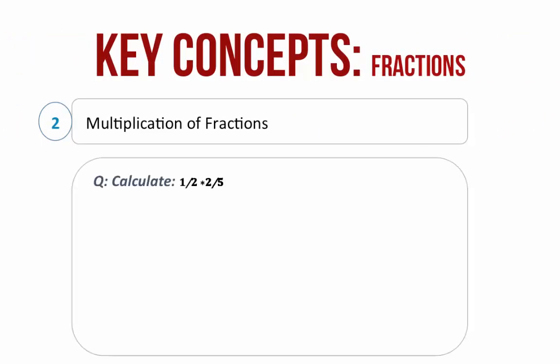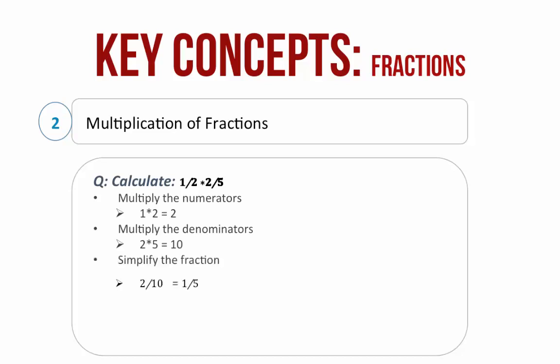Multiplication of fractions. Let us take an example: 1 by 2 into 2 by 5. Multiply the numerators, that is 1 and 2, which equals 2, and multiply the denominators, 2 and 5, which equals 10. The new fraction is therefore 2 by 10. We now simplify the fraction by removing the common factors. 2 by 10 simplifies to 1 by 5. The common factor here is 2.